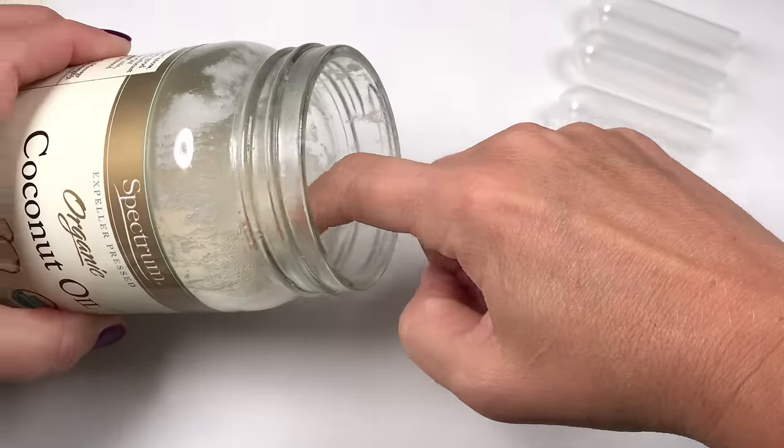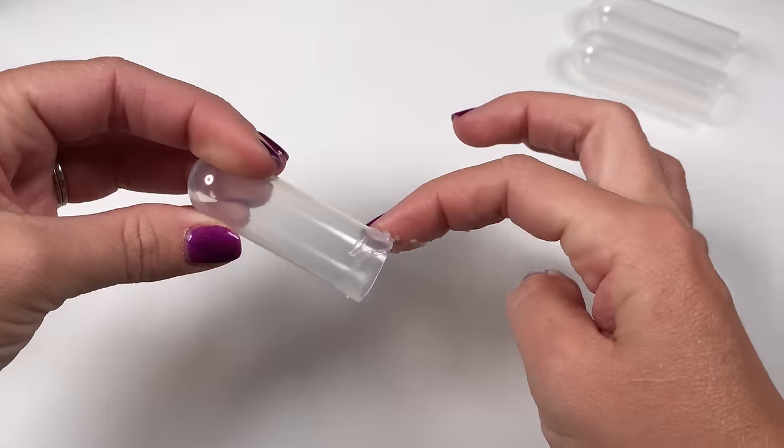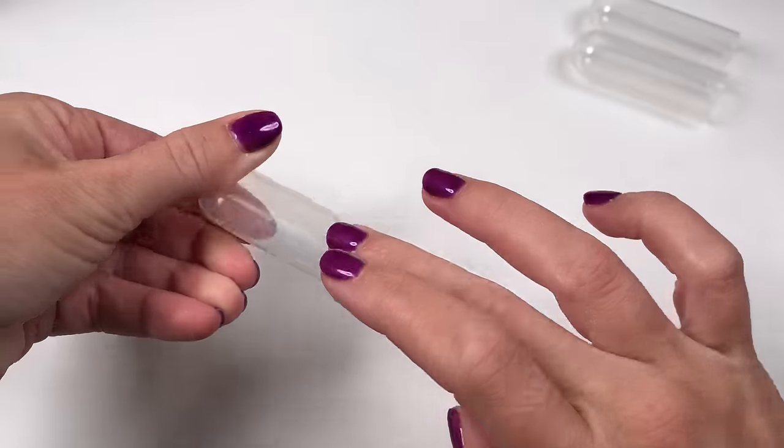This is optional, but you can grease the outside of your water bottle before you add the hot glue. This helps the hot glue peel off easier.